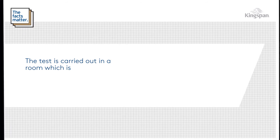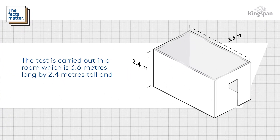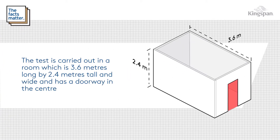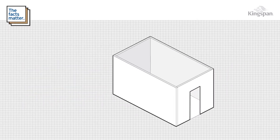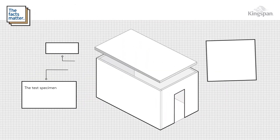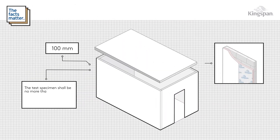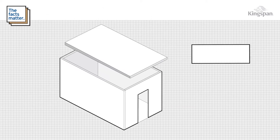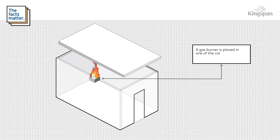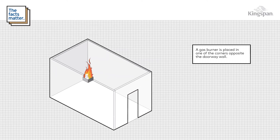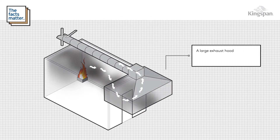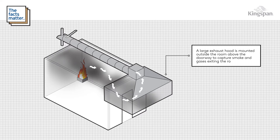The test is carried out in a room which is 3.6 meters long by 2.4 meters tall and wide, and has a doorway in the center of one end. The test specimen shall be no more than 100 millimeters thick, including an air gap, and lines the ceiling and three of the room's walls. A gas burner is placed in one of the corners opposite the doorway wall.